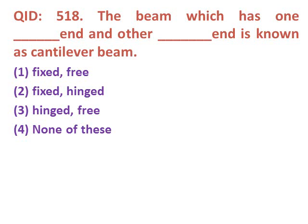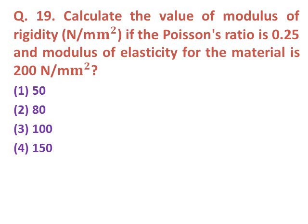Question seventeen: The beam which has one [fixed] end and other [free] end is known as a cantilever beam. As we know, a cantilever beam is fixed on one side and free on the other. Option one: fixed-free. The correct answer is option one — fixed and free.